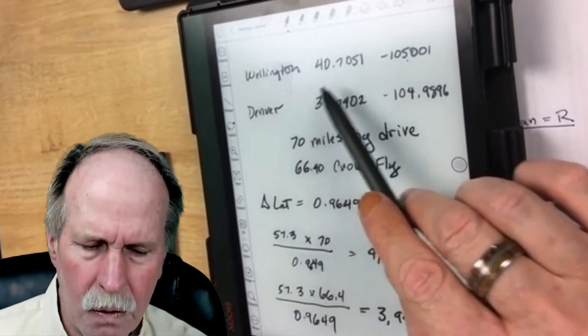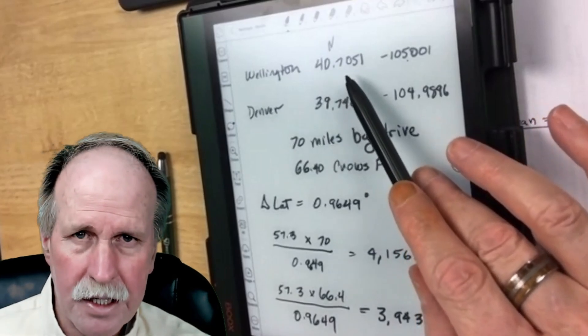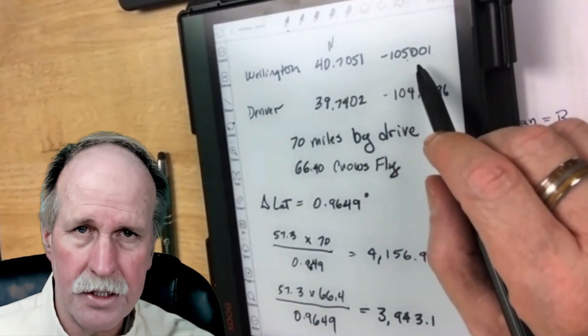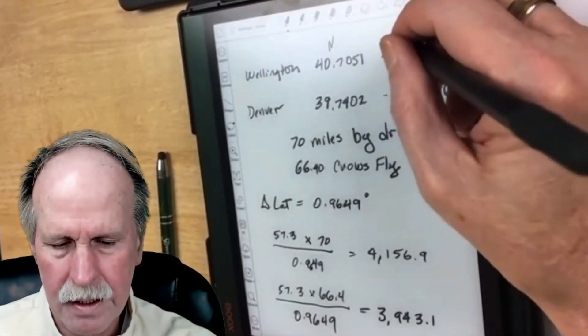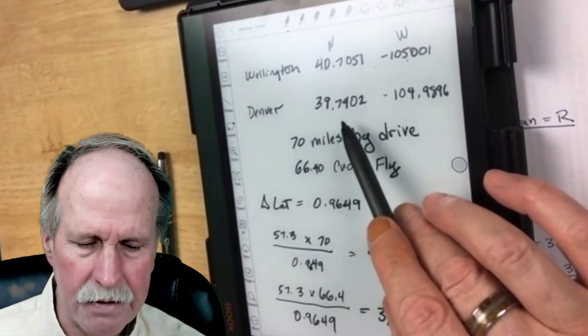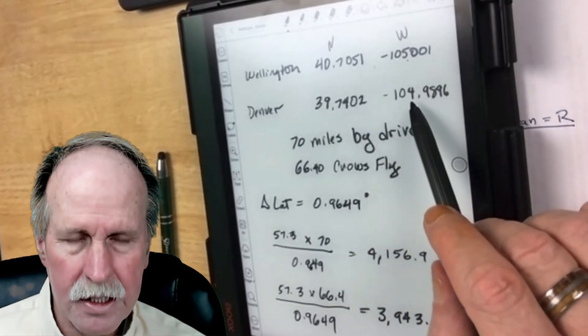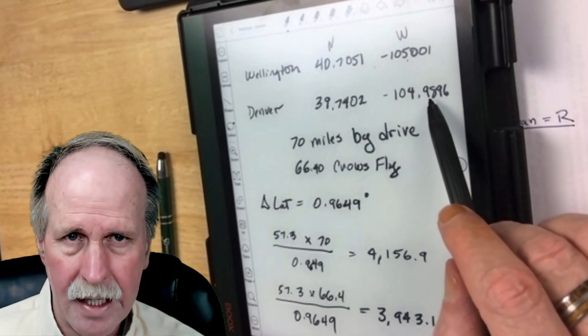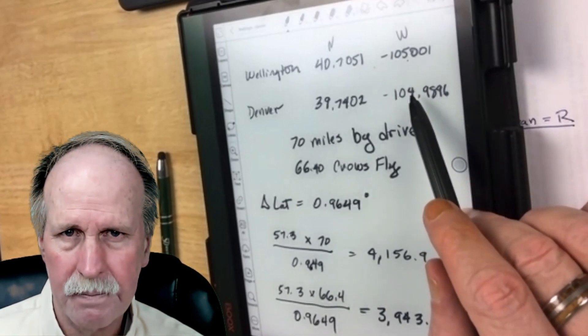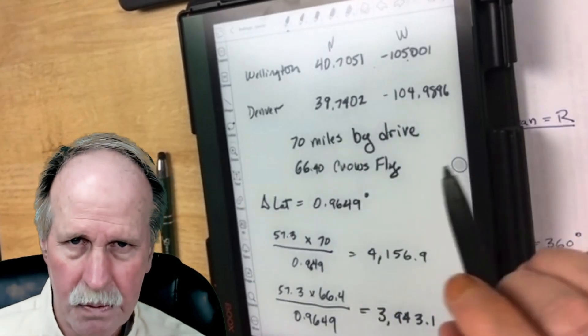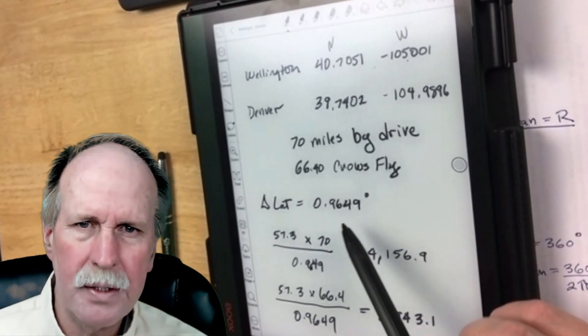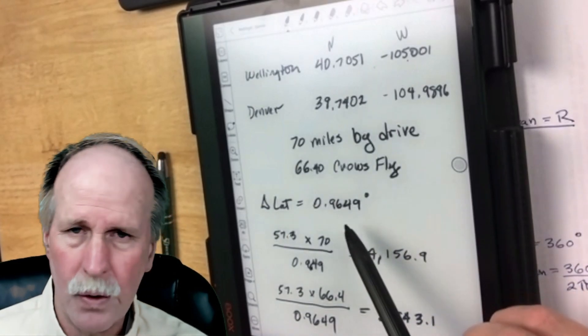Right here, you'll see the coordinates of Wellington. This is 40.7051 north, and it's 105.001 degrees west. That's what the negative means. The point in Denver that we started was 39.7402, and its longitude is 104.9896. As you see, these longitudes are very close to each other. So it's 70 miles by drive and 66.4 miles as the crow flies. The difference in latitude between these two locations is 0.9649 degrees.